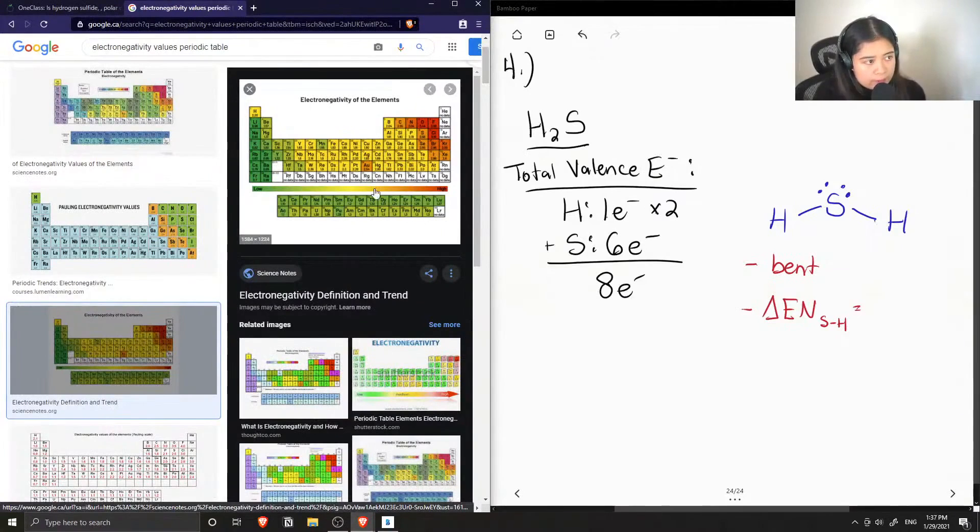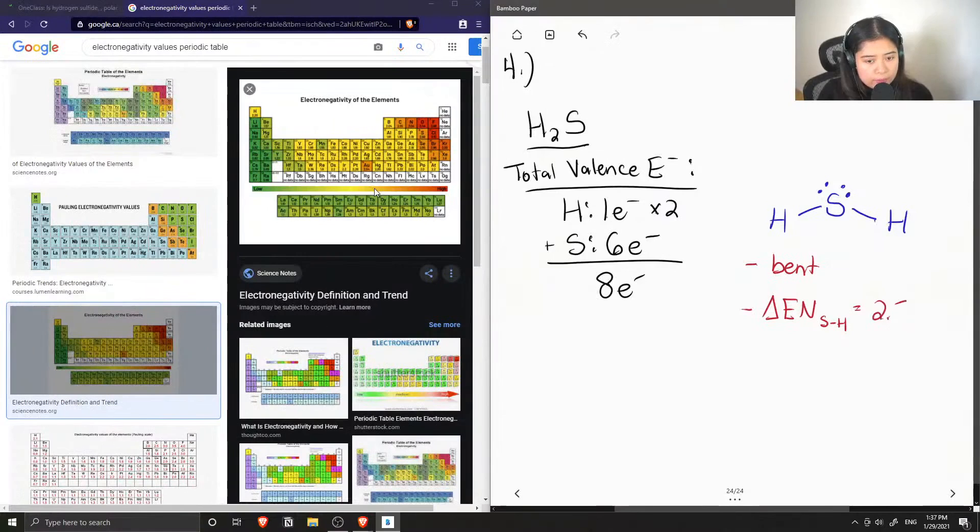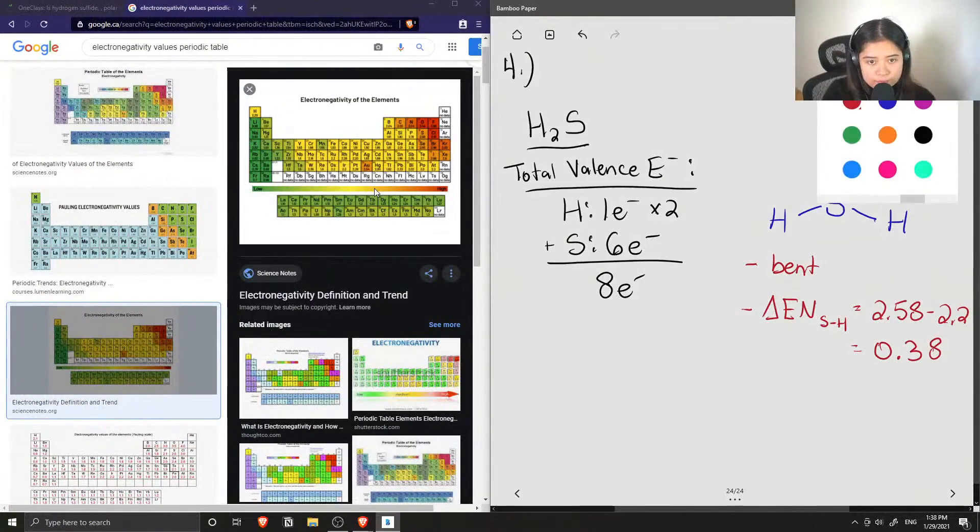Okay so the electronegativity value for sulfur is 2.58 and for hydrogen it's 2.20. So when we find out the electronegativity difference we only get around 0.38, which isn't that big of a difference.